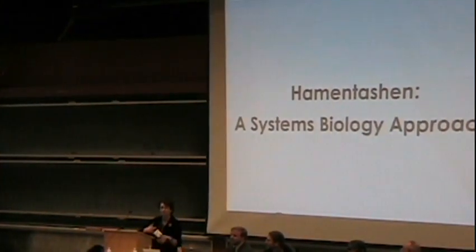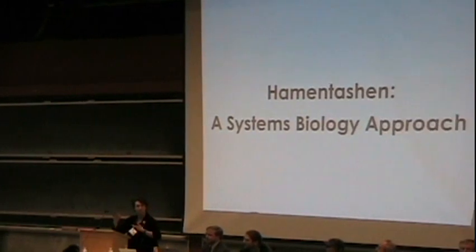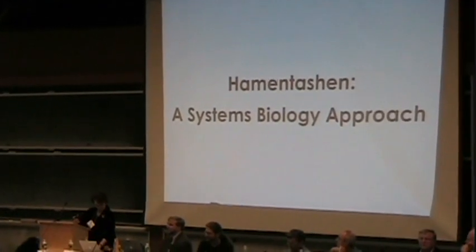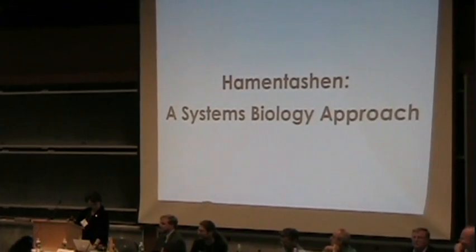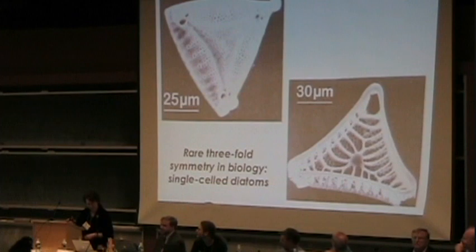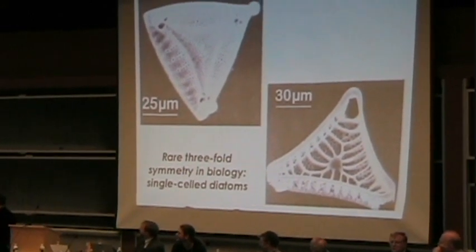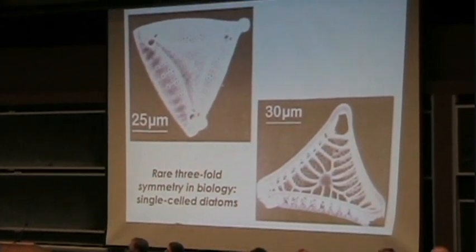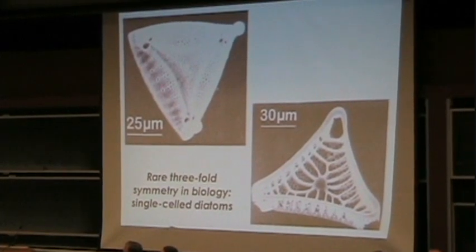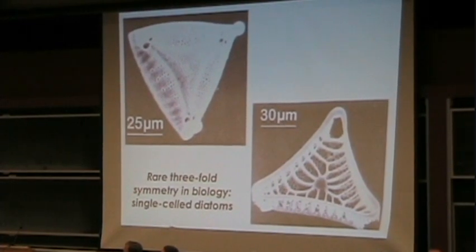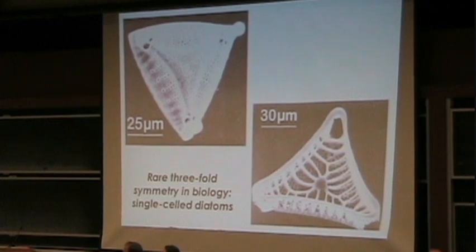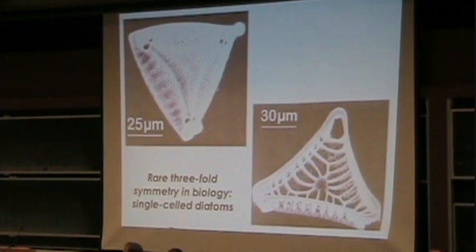I'm going to tell you about the biology of the Khamintoshan species, and I want to tell you about the systems biology approach, because I think you'll, as MIT people, resonate with it. The question I want to begin with is a question of symmetry in life. Three-fold symmetry is very rare.